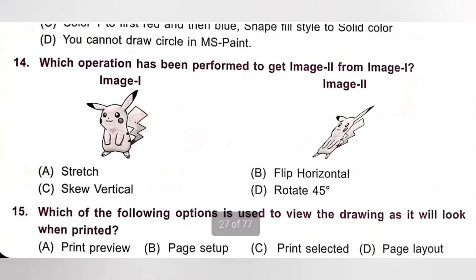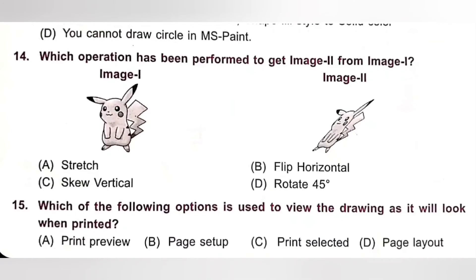Question 14: Which operation has been performed to get image 2 from image 1? A. Stretch, B. Flip Horizontal, C. Skew Vertical, D. Rotate 45 degrees. Please pause and check images 1 and 2. This is skew vertical — the operation performed to get image 2 from image 1. Option C is the correct answer.